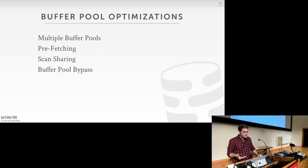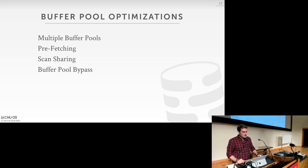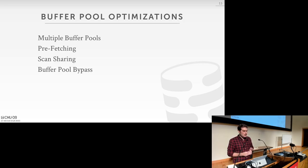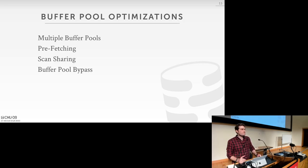The buffer pool optimizations we're going to discuss, moving from simpler to more complex ideas, are: using multiple concurrent buffer pools at the same time rather than just one; using different prefetching techniques; scan sharing across multiple queries; and using a buffer pool bypass mechanism for individual queries.